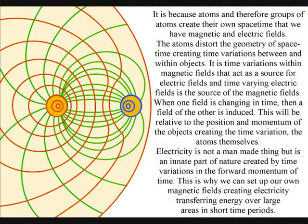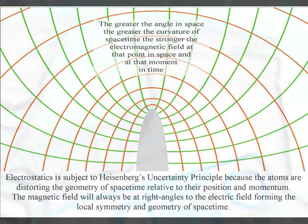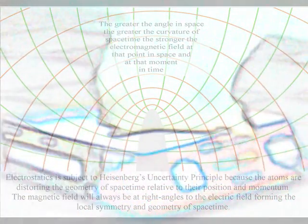A time-varying electric field acts as the source of a magnetic field, and the time-varying magnetic field are the source of electric fields. When either field is changing in time, then a field of the other is induced. This will be relative to the position and momentum of the objects creating the time variation, the atoms themselves.